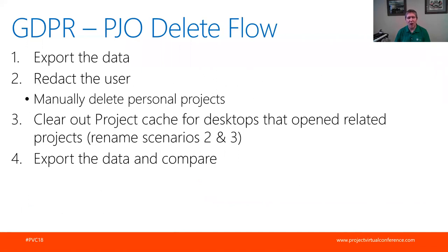The data flow for Project Online would be: export the data, redact the user manually, remove any personal projects, and clear out the project cache for desktops that opened related projects. This last step is important - if you've got a project checked out, you could have a copy in your local cache, so it's not enough to just clean the server. If people can open the project from their local cache and see information that shouldn't be there, the local cache would also need to be cleared. You'd probably then need to do another data export just to make sure everything you expected to be gone is actually gone.